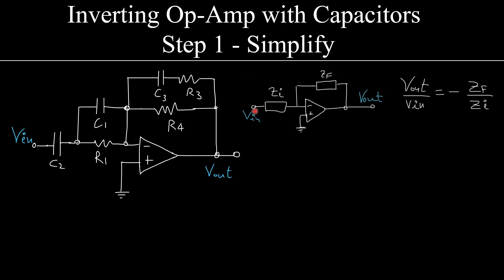Step number one, we try to create this configuration where there is an impedance tied between the input and the inverting input of the op-amp, and an impedance tied between this inverting input to the output. We want to do this because we know the closed-loop gain in that situation - the output over the input is going to be minus Zf over Zi.